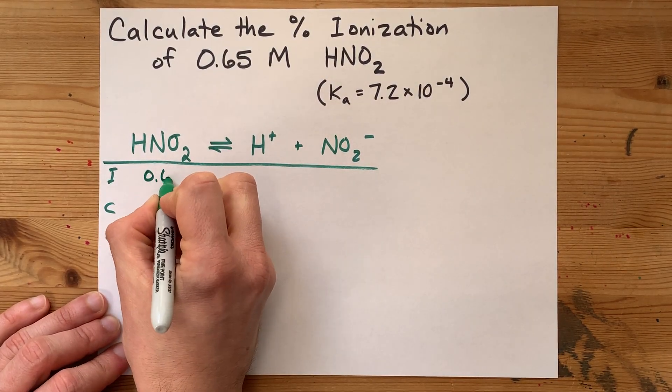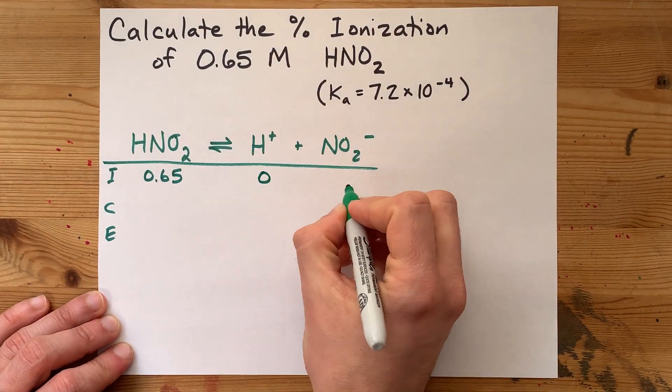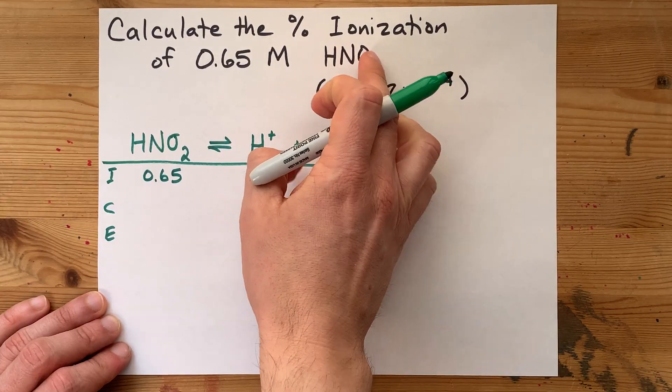We are starting with 0.65 moles per liter of HNO2, and we're starting with no H plus and NO2 minus because we're only putting HNO2 in there.